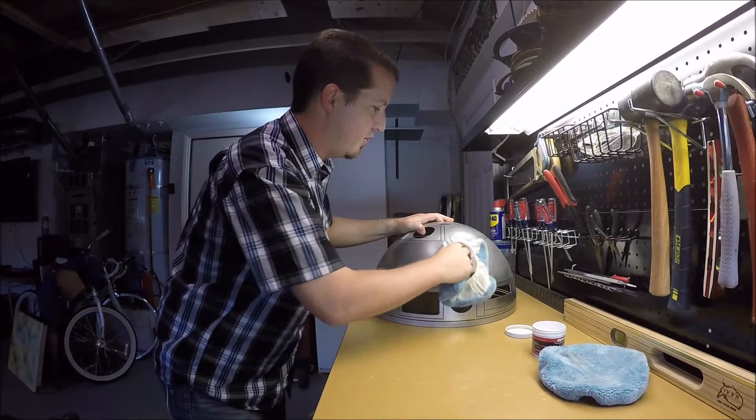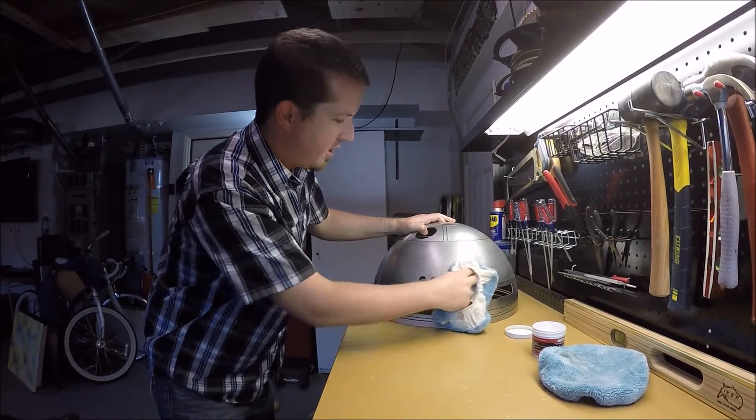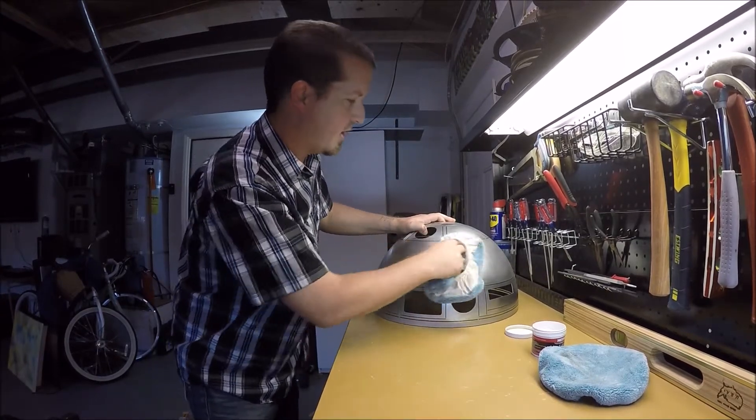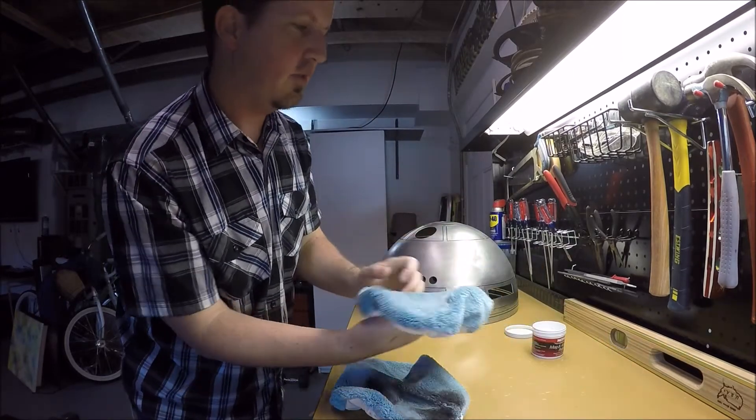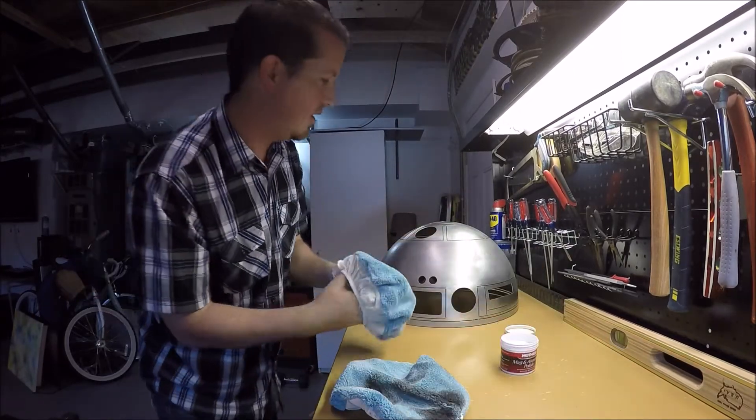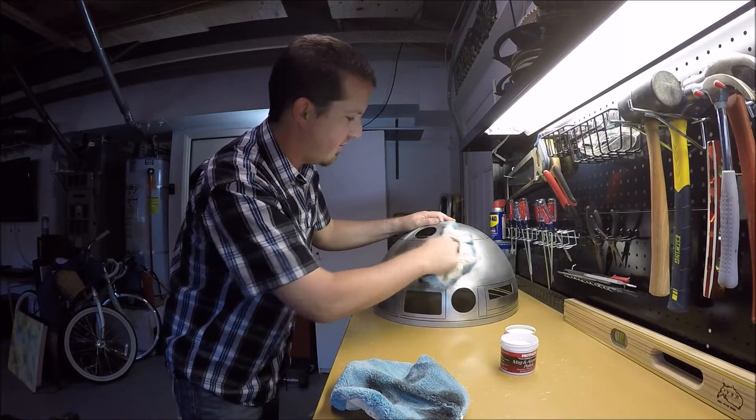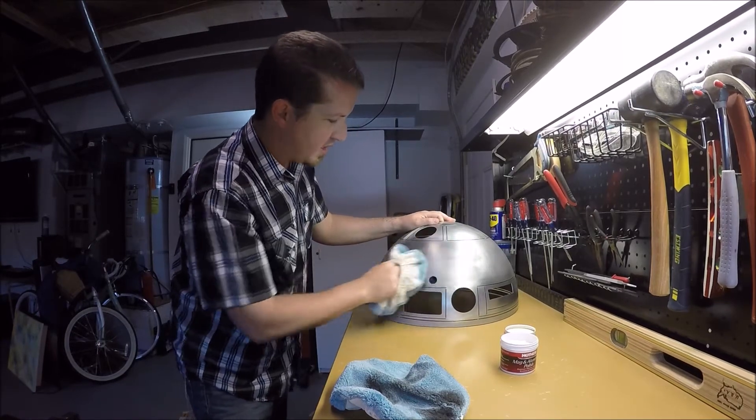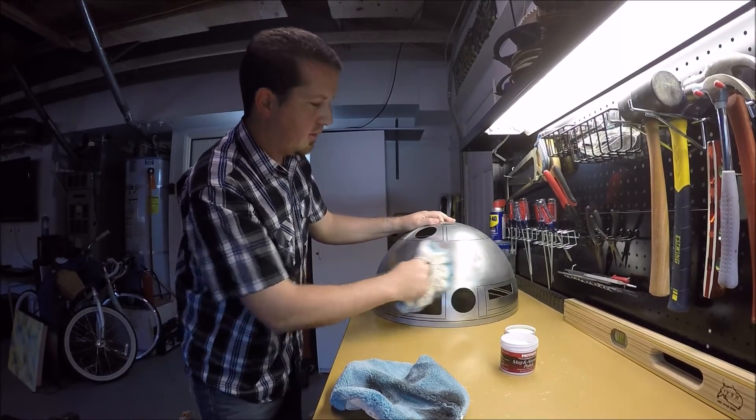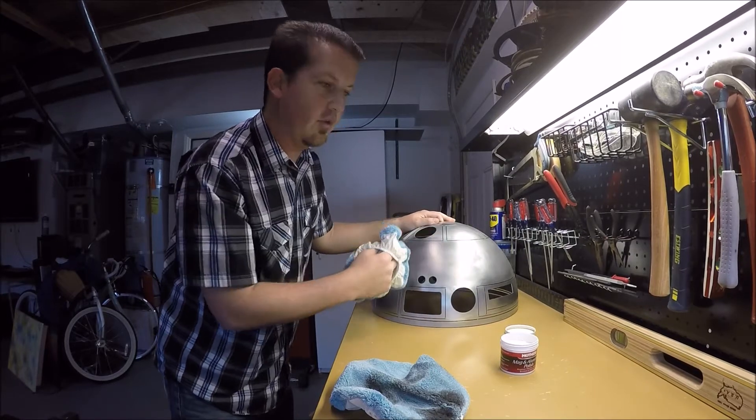As soon as you start to see that it is turning to a blackish color, you're going to use your clean terry cloth, which did not put the polish on, and you use that to buff it out. We're just going to keep going over this until we have the proper sheen you're looking for.